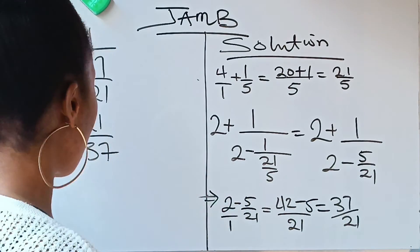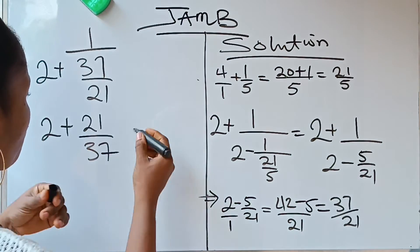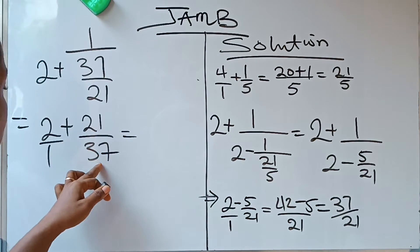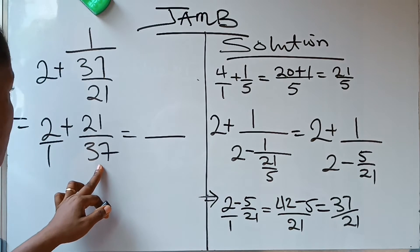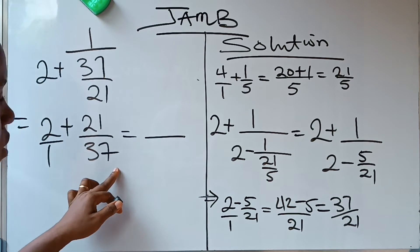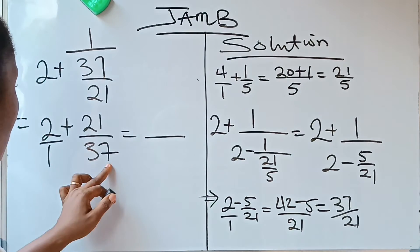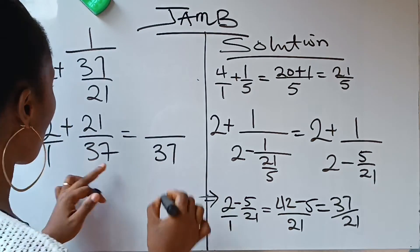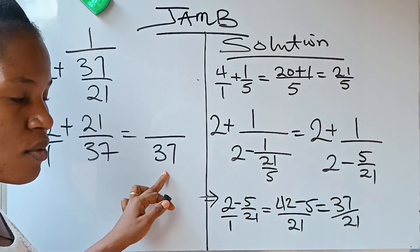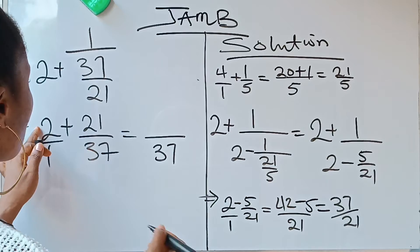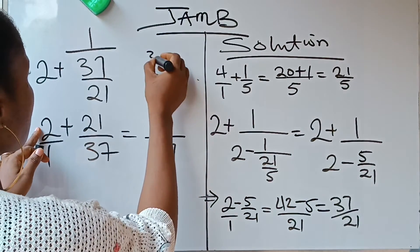So this is what we have, which is the same thing as 2 over 1 plus 21 over 37. We are going to solve this just like normal fraction. Again, the LCM is 37. 1 divided by 37 is 37. 37 times 2 is going to give us 74.